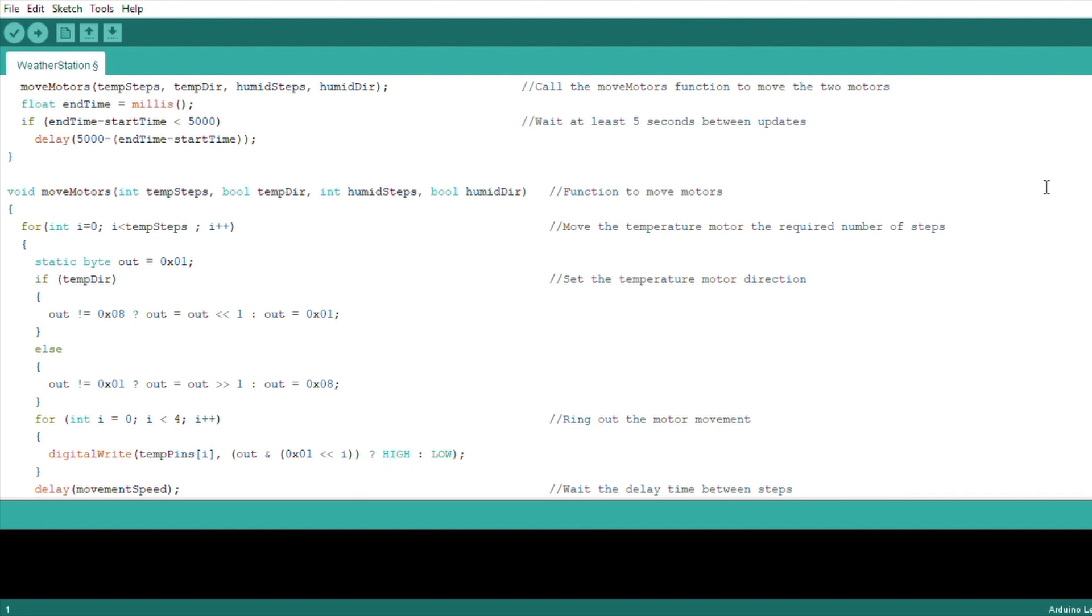The move motors function just rings out the movement of each motor by the required number of steps and in the required direction, with a short delay between each pulse to slow the motors down.